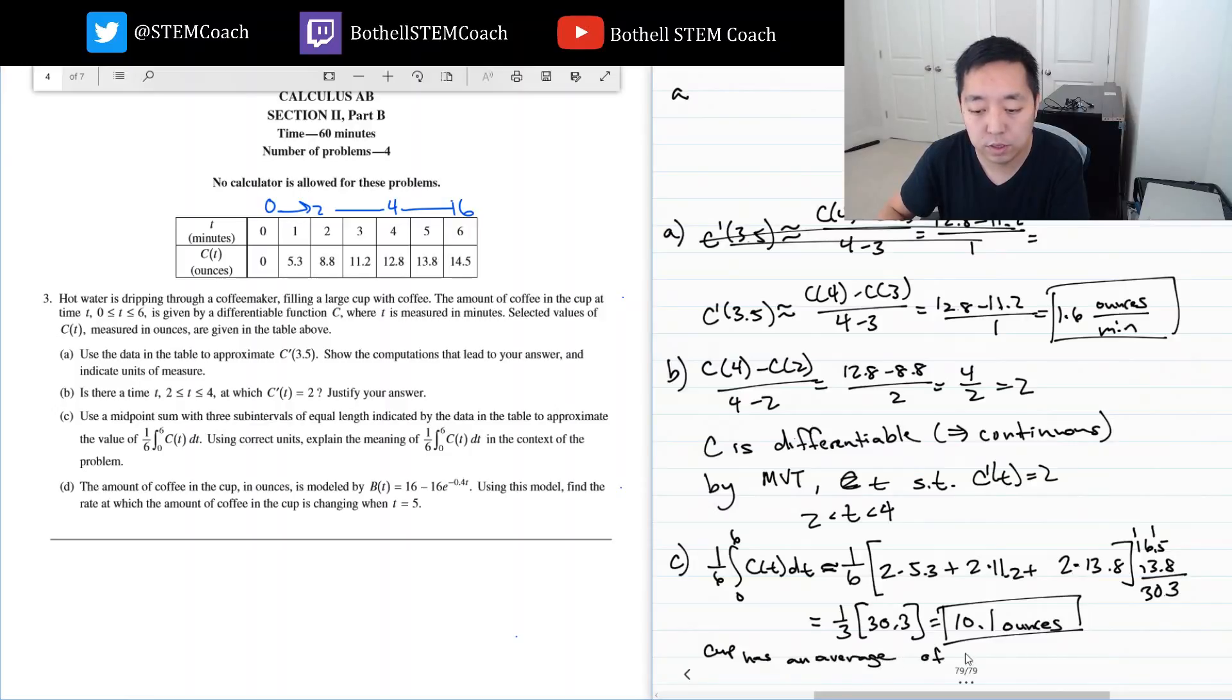It says that the cup has an average of 10.1 ounces of coffee during this time. During this time, we have an average of 10.1 ounces. That's the average value because the whole area divided by the width of the interval is average value. You have to recognize this as average value of c.